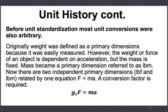Before unit standardization, most unit conversions were also arbitrary. Originally, weight was defined as a primary dimension because it was easily measured. However, the weight or force of an object is dependent on acceleration, but the mass is fixed. Mass became a primary dimension referred to as pound mass. At this point, there were two independent primary dimensions — pound force and pound mass — related by one equation: force equals mass times acceleration. This required a conversion factor.